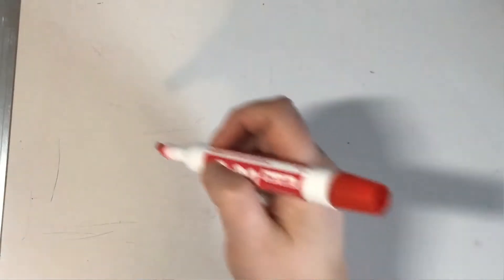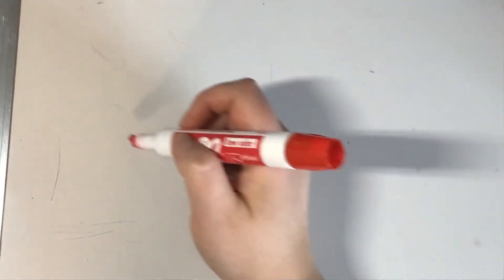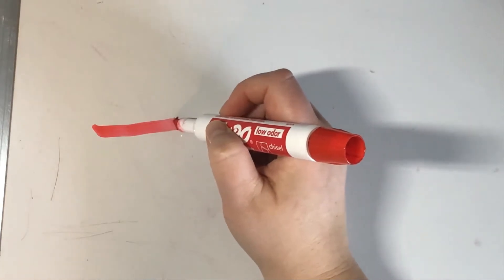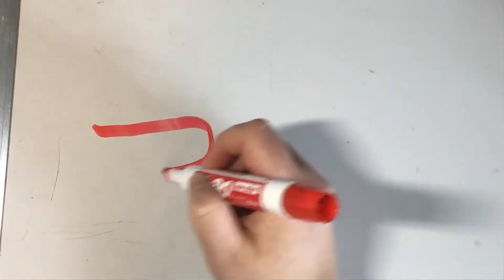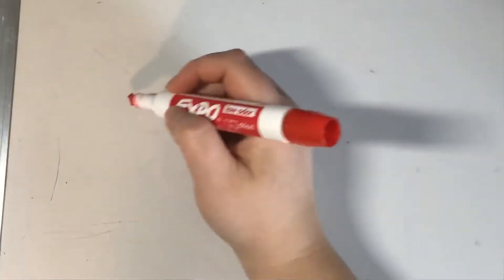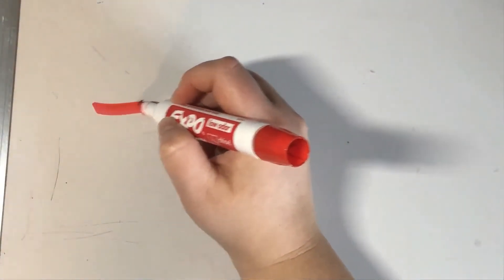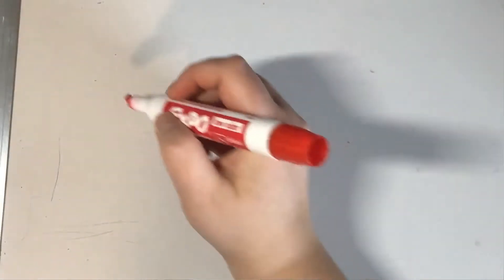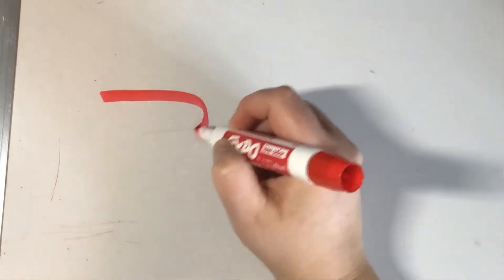Tsu is one of the easier ones to do — it's basically one line. You're going to go left to right, and when you get to the end, keep going, curve around and bring it back. That's tsu — kind of like a sideways hook.